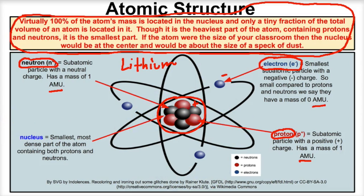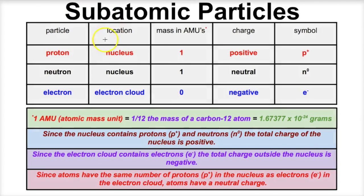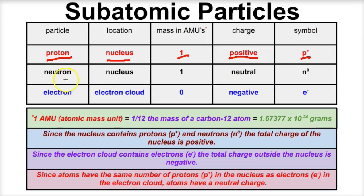Here is a table showing the different subatomic particles, their location, masses, charge, and symbols. The proton is located inside the nucleus, has a mass of one AMU, has a positive charge, and has its own symbol. The neutron is also located in the nucleus, has a mass of one AMU, has a neutral charge, and is written with its own symbol.